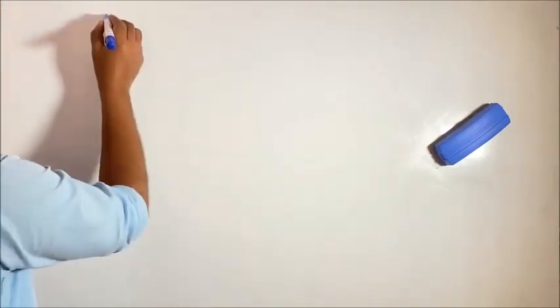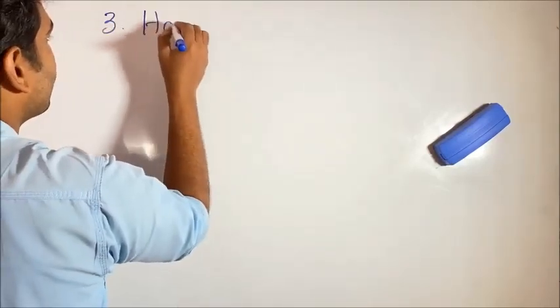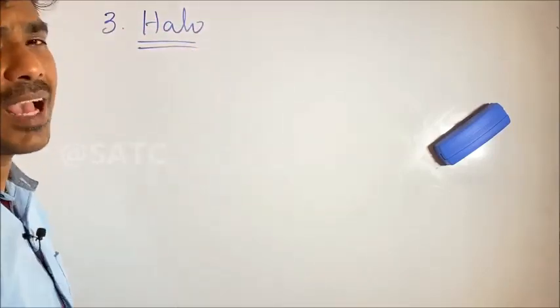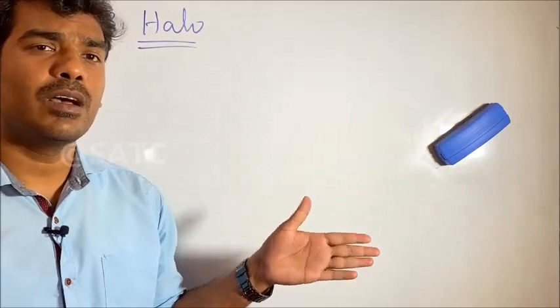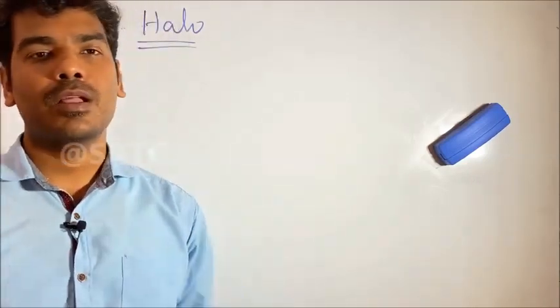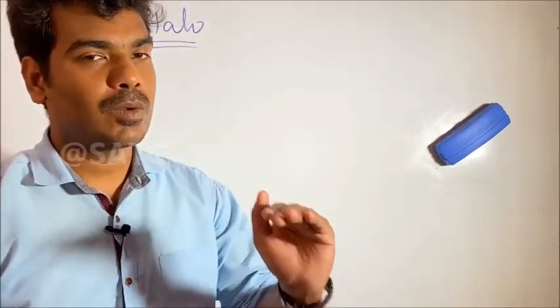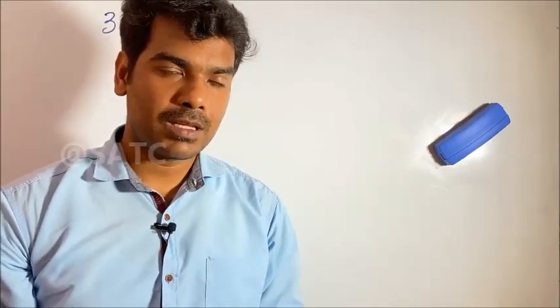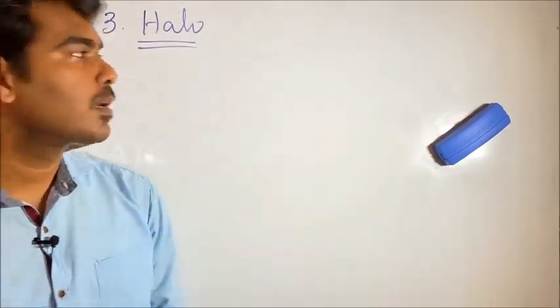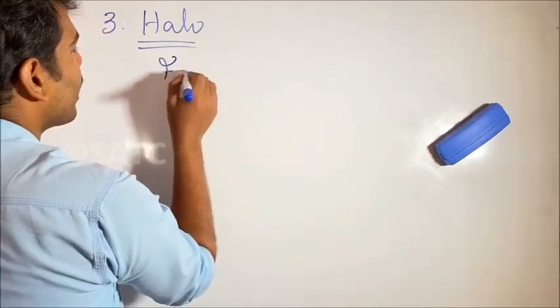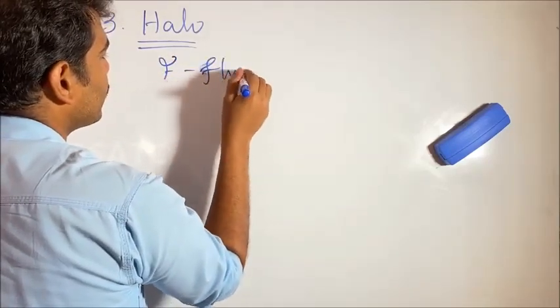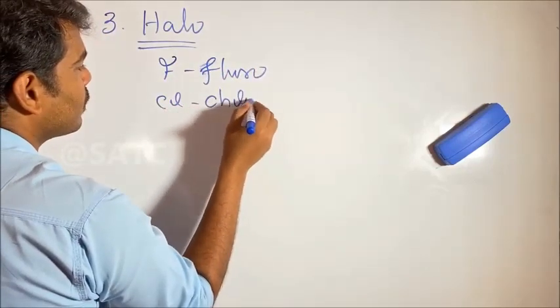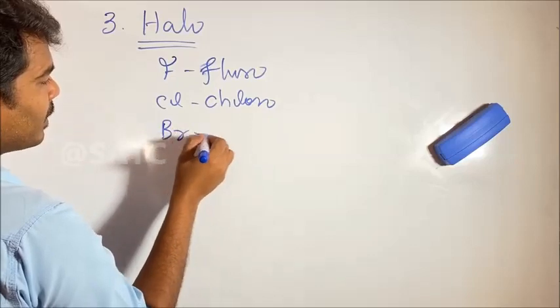The Halo Group consists of Halogens, which are in Group 17. These include Fluorine, Chlorine, Bromine, and Iodine. We are going to discuss the prefix used for each. For example, Fluorine becomes fluoro, and Chlorine becomes chloro.